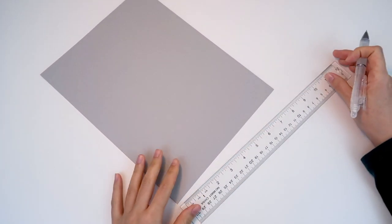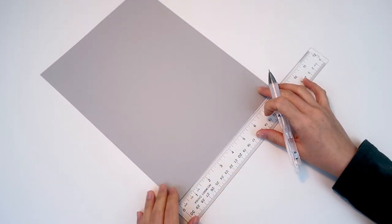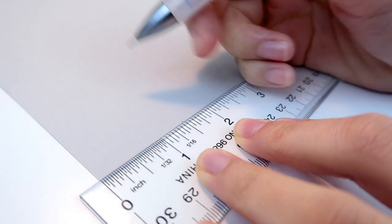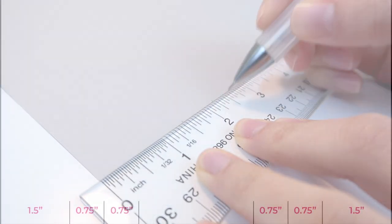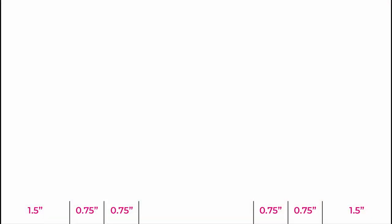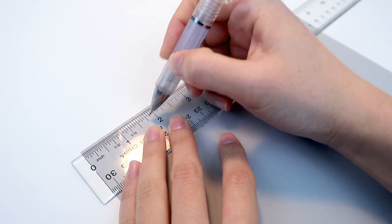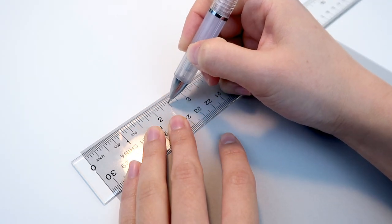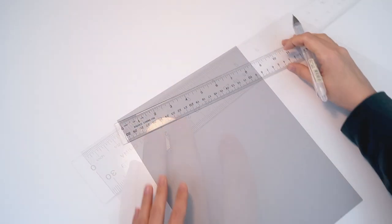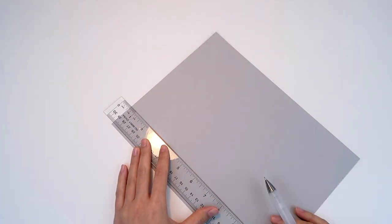Get one sheet of paper ready, and on the short side, measure and make a light tick mark at 1.5 inch, 0.75 inch, and 0.75 inch. Now repeat making the same 6 tick marks on top of the paper as well. Connect the dots vertically. You'll end up with 6 lines, 3 lines on the left and 3 lines on the right.